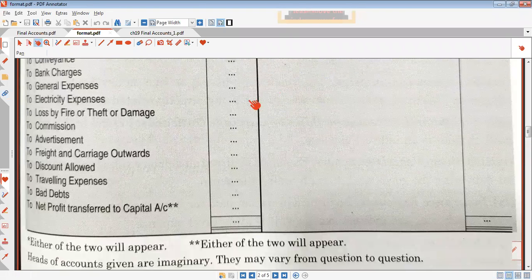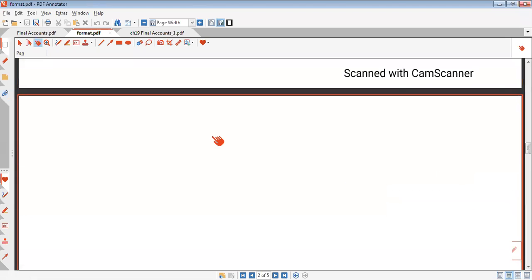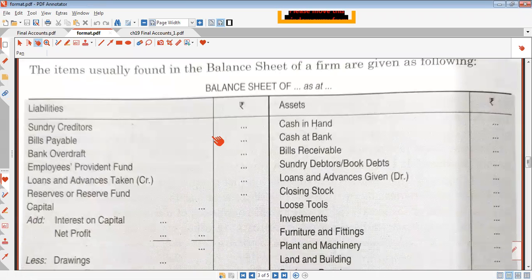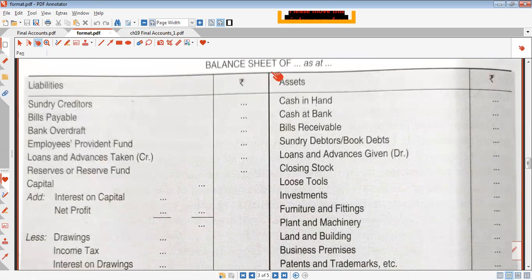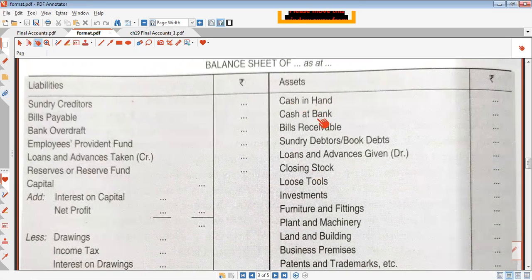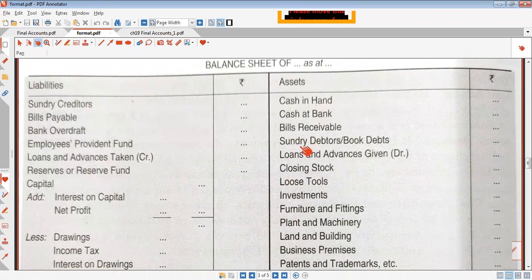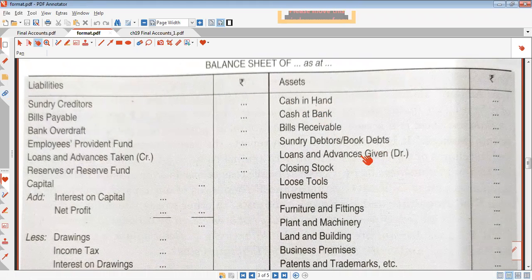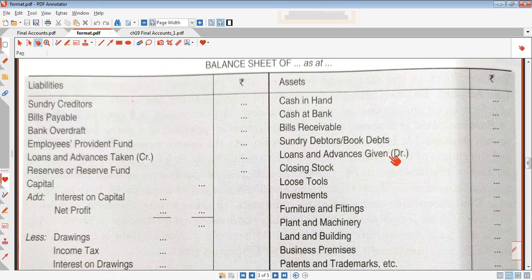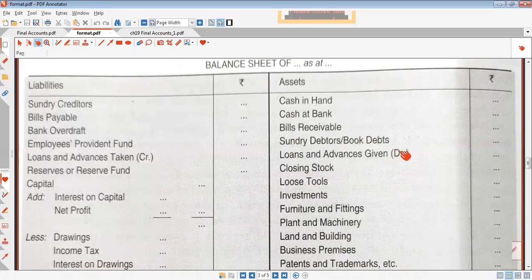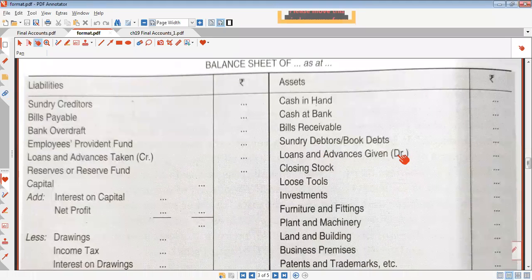Thank you Harshit for reminding me to record the session. Here we have the format of balance sheet. In the balance sheet, we have various assets: cash in hand, cash at bank, bills receivable, debtors, and loans given. When we give money to someone, it is our asset because we can recover it in the future.